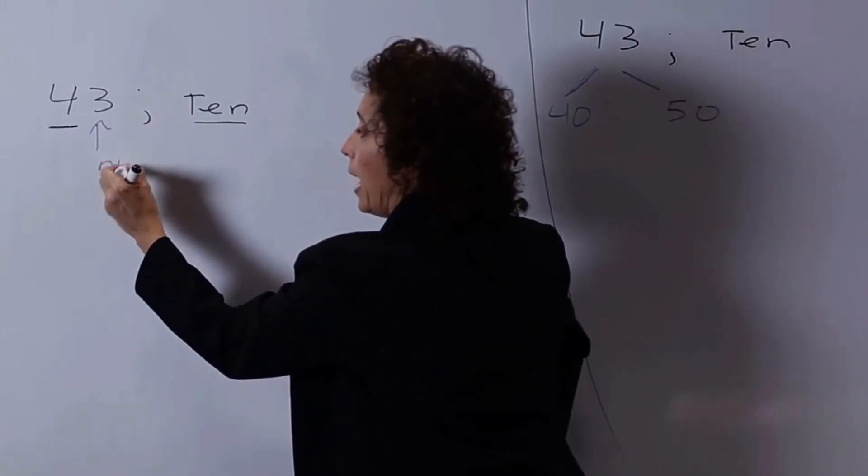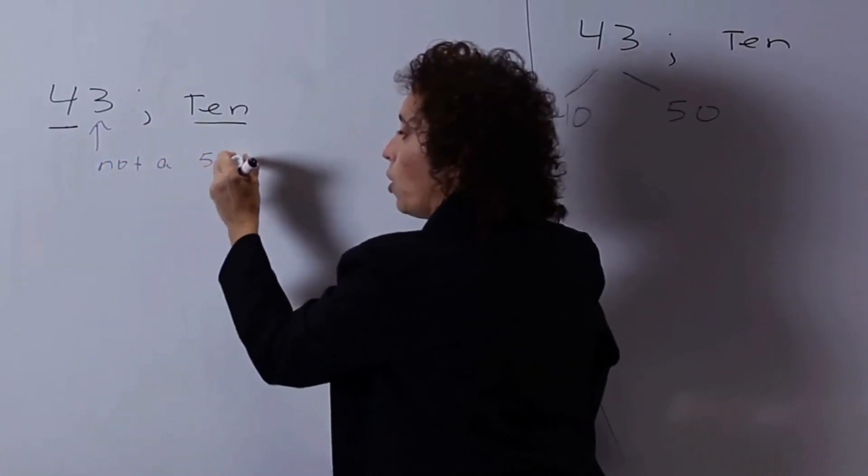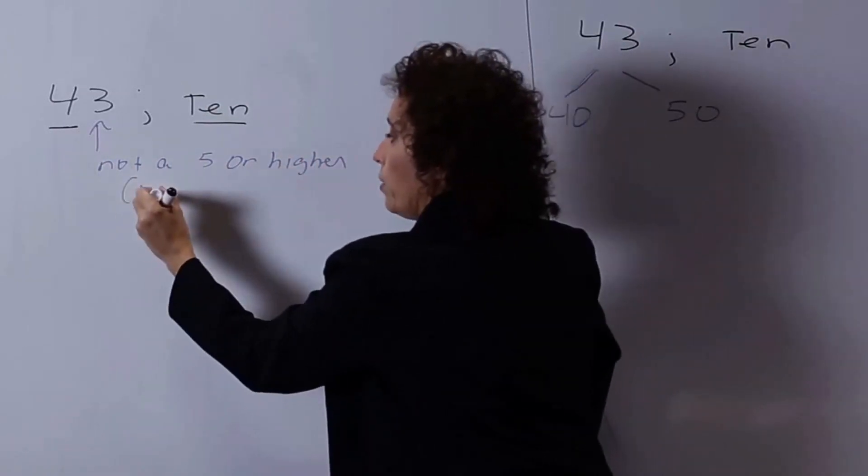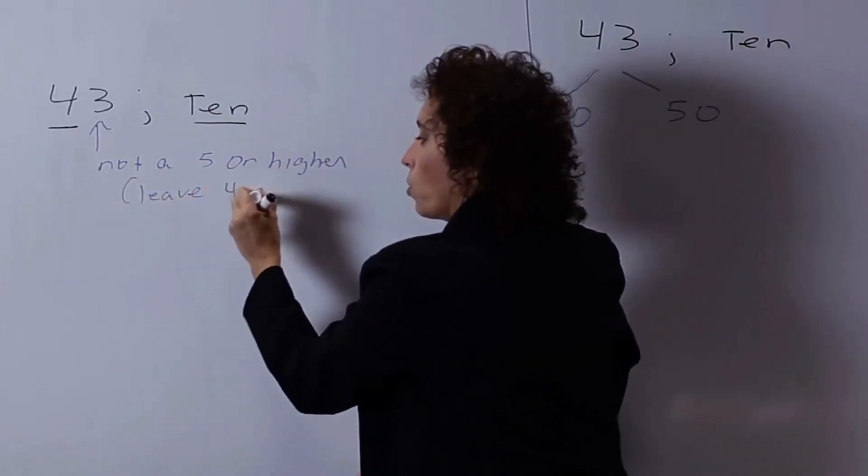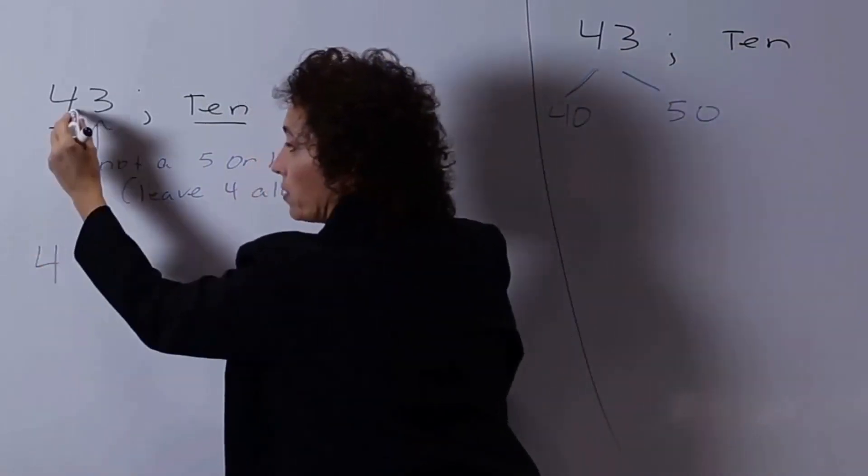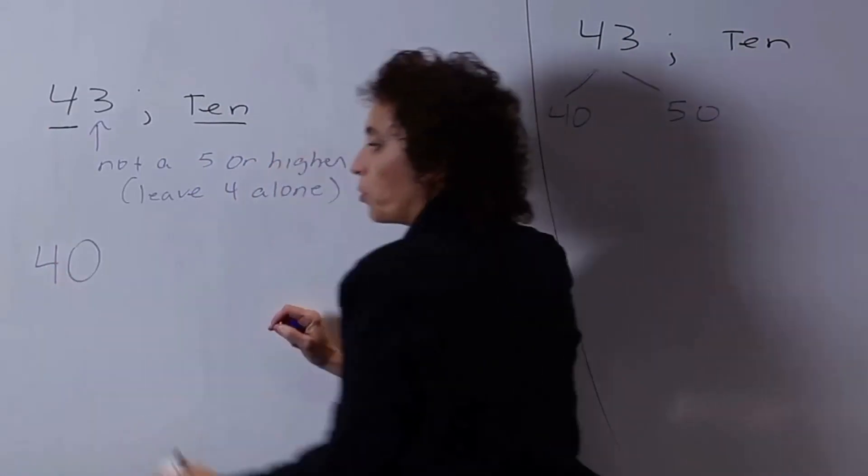So I look at this number, it's not a 5 or higher. So we're going to leave the 4 alone. So we're not going to do anything to the 4. This becomes 4, that stays. And then where you saw the 3, we just put a 0.